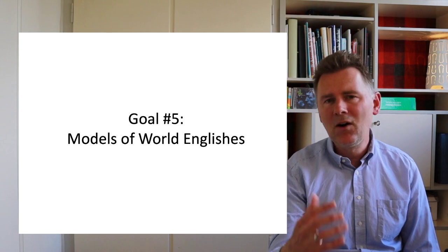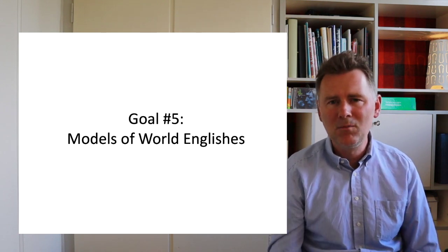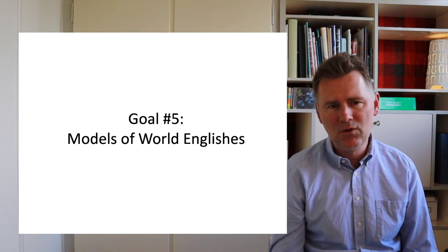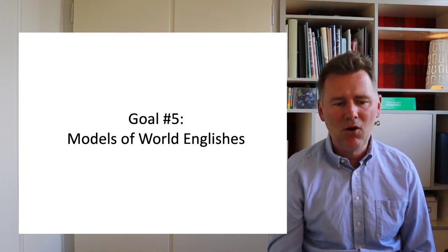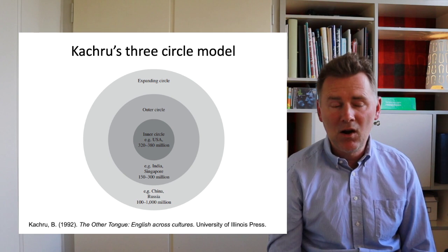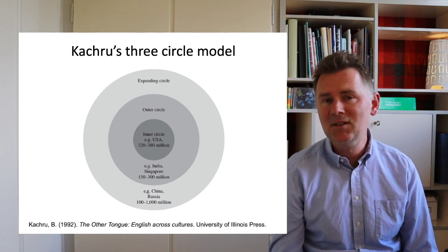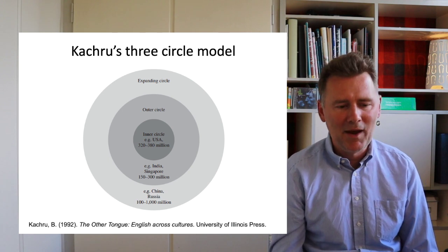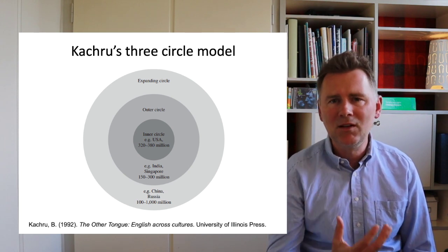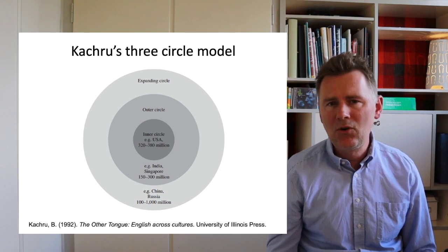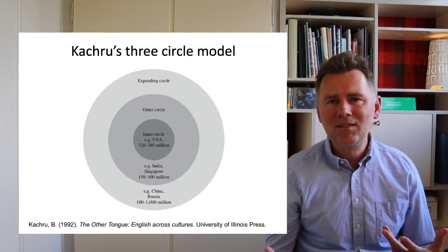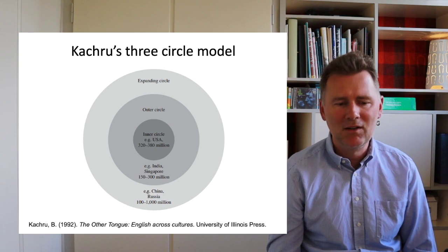I'm moving on to the fifth and final goal: different models of World Englishes and how they develop. There are two models we'll encounter often. One is Kachru's three-circle model, which has an inner circle, an outer circle, and an expanding circle. Kachru's inner circle captures varieties such as American English and British English — corresponding to English as a native language. Outer circle varieties are the ESL varieties: Indian English, Singapore English, and so on. The expanding circle varieties correspond to EFL varieties: English in China, English in Russia, English in Switzerland.